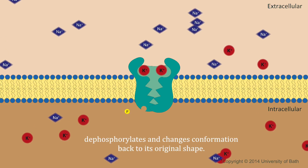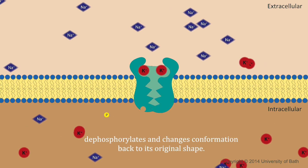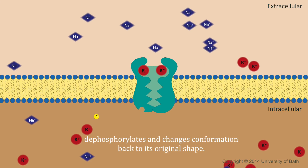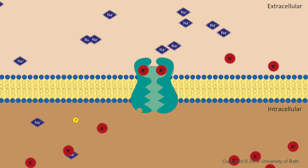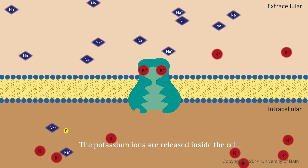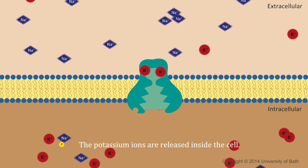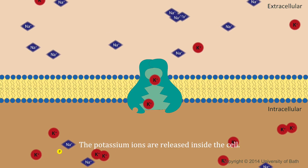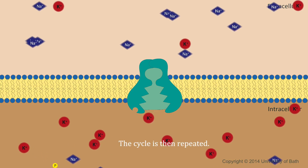The pump dephosphorylates and changes conformation back to its original shape. The potassium ions are released inside the cell, and the cycle is then repeated.